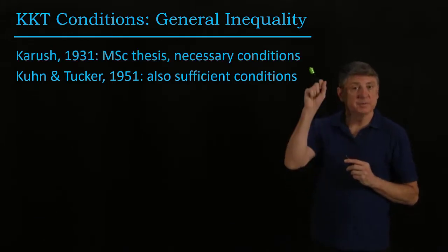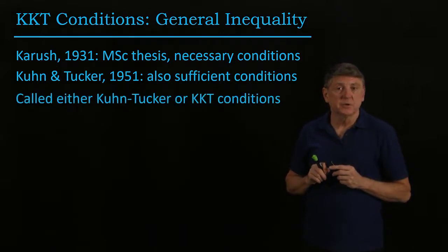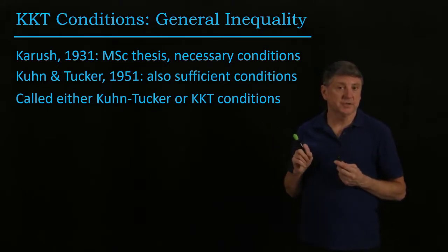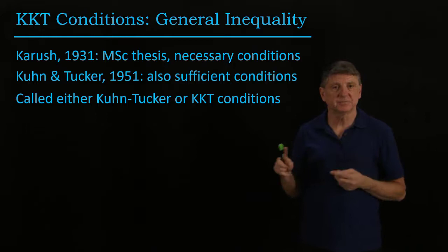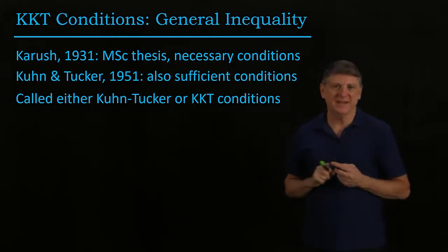It turns out that a master's thesis preceding them by 20 years posed these as the necessary conditions. So depending on what you read, these might be called the Kuhn-Tucker conditions or the KKT conditions. Let's include the master's student and we'll call them the KKT conditions.